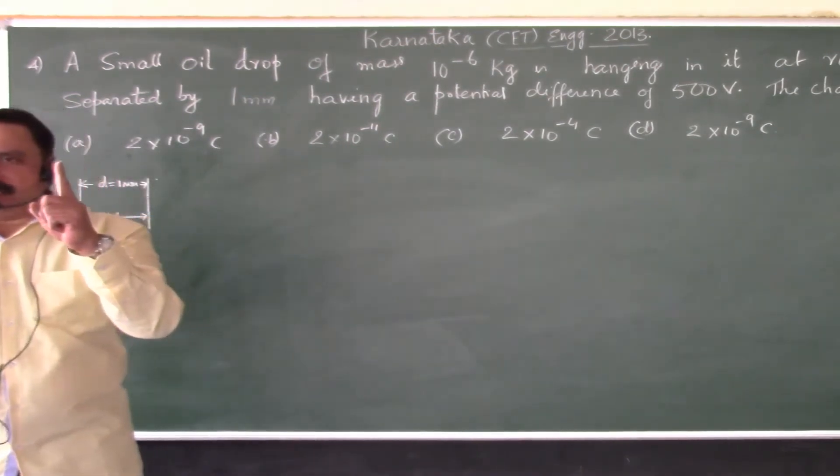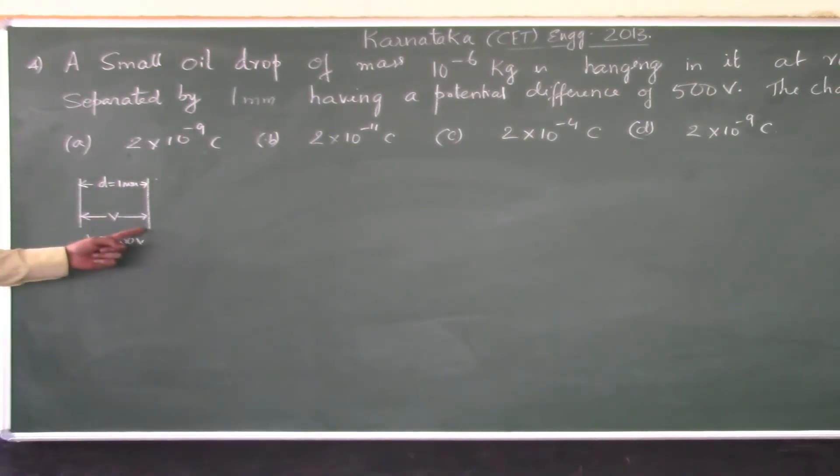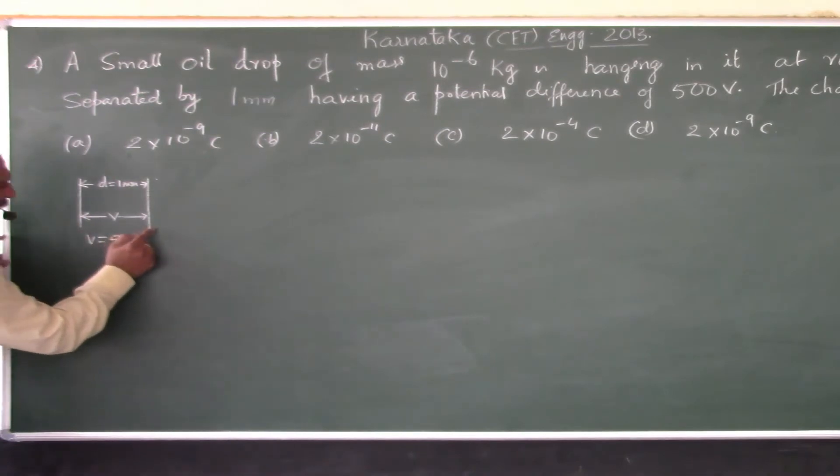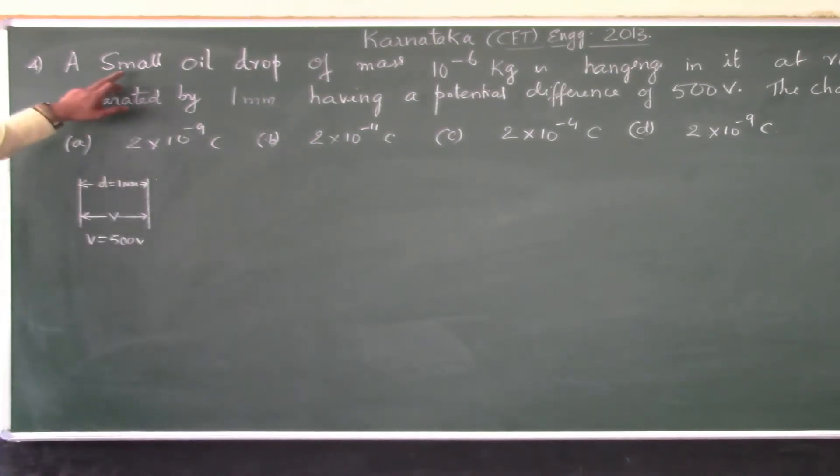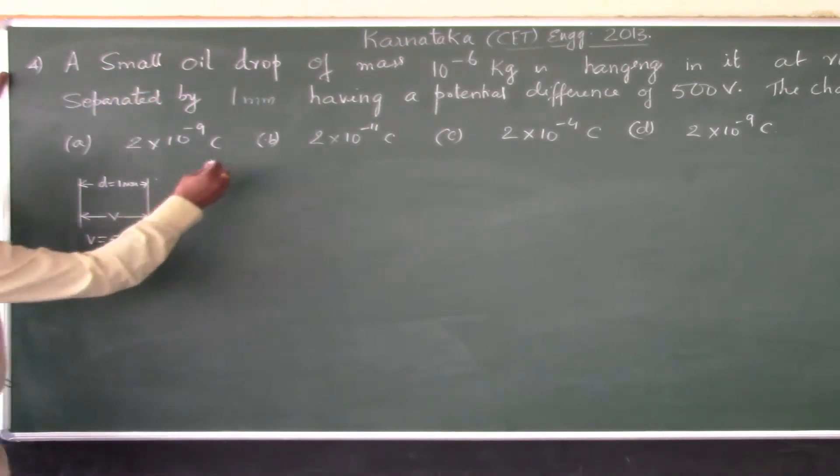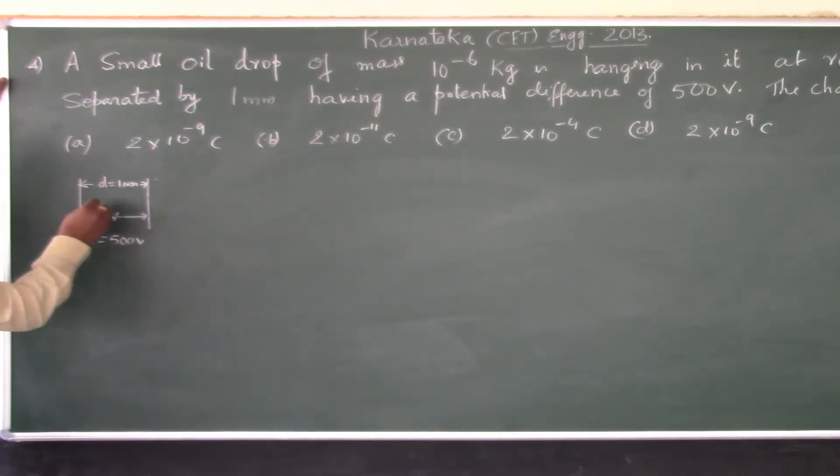Imagine that there are two charge plates, plate 1 and plate 2, which are held 1 millimeter apart and the PD, the potential difference between the plates, is 500 volts. A small oil drop of mass 10 to the power of minus 6 kg is hanging in it. This is a small oil drop which is hanging, which is at rest, which is in equilibrium.